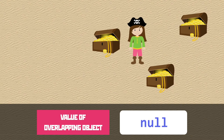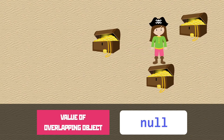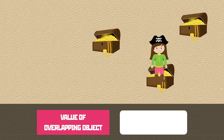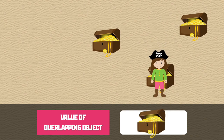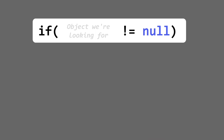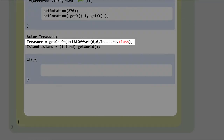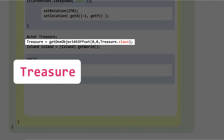If we move away the variable shows null again because it's not overlapping with anything. How does this help us in code? It's pretty obvious that if the variable is null there's nothing colliding and we don't need to do anything. So we need to say that if it is not null then we need to do something. The exclamation mark and equal sign means 'not equal to'. The object we're looking for is the variable we've set up for the treasure — Treasure with a capital T.